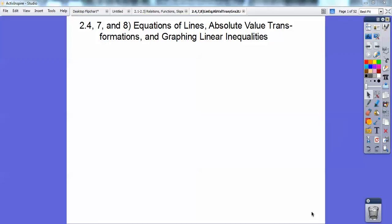Hey guys, Mr. Bullock here. This is sections 2.4, 2.7, and 2.8 in our Algebra 2 book. We skipped 2.5 and 2.6 on one block and then the other one we didn't. So that's why I do have that on a different video. So equations of lines, absolute value transformations, and graphing linear inequalities.